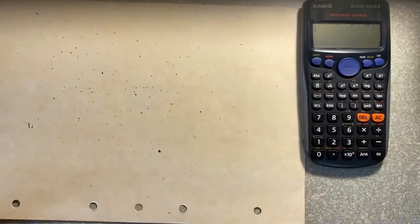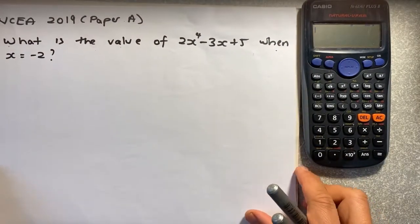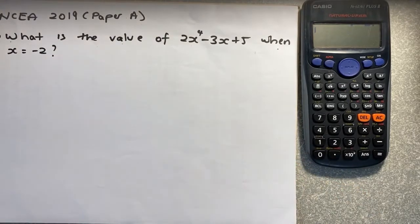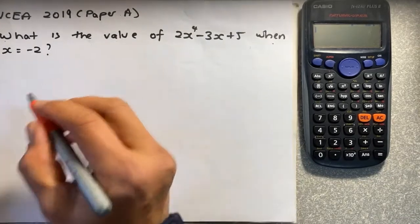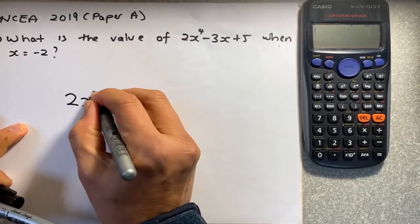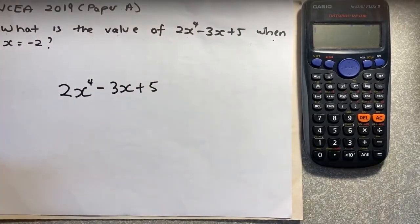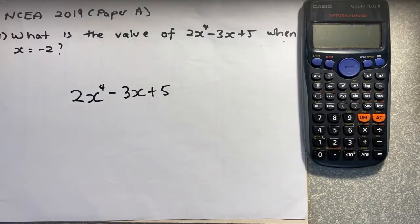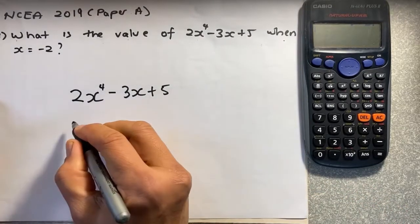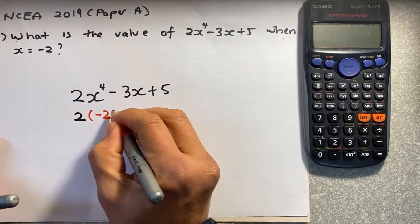Now we are going to look at two questions from the 2019 NCEA MCAT exam, and we shall see whether you can achieve by using your calculator. The question is: what is the value of 2x⁴ minus 3x plus 5, when x is negative 2? So you're going to write the question: 2x⁴ minus 3x plus 5, when x is negative 2. You're going to replace x with negative 2.